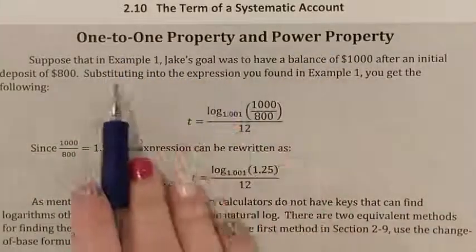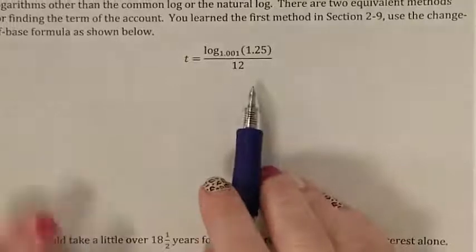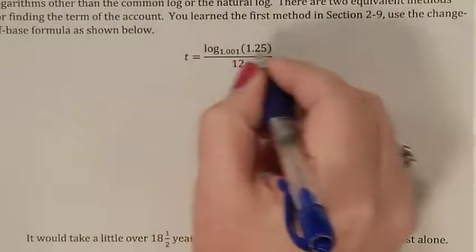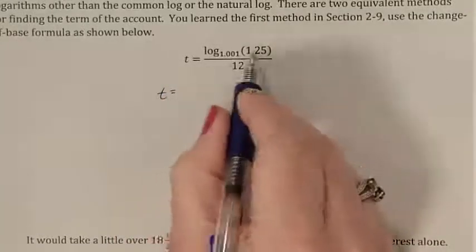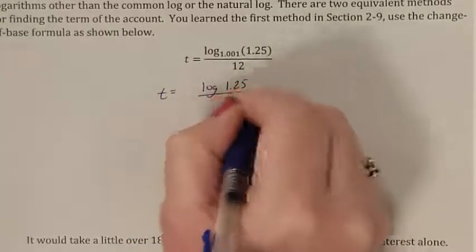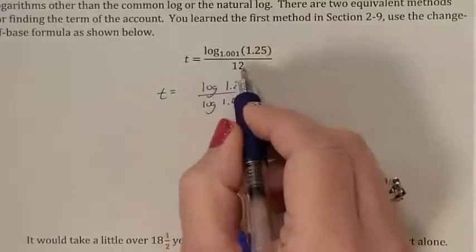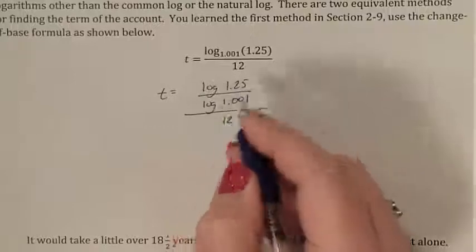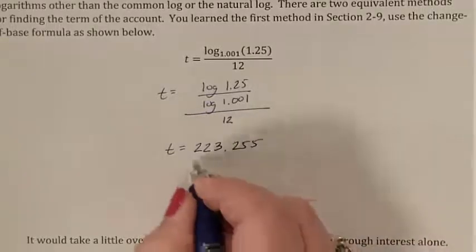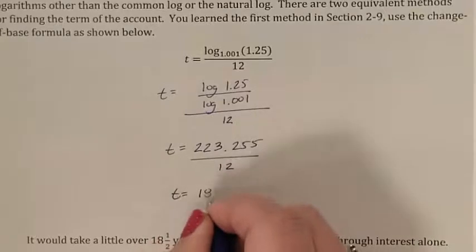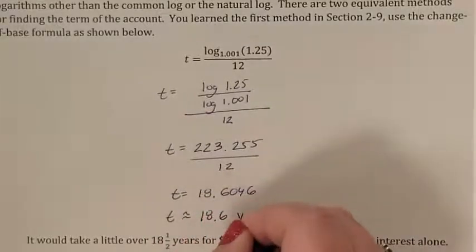Lesson 2.10 has a second article that you need to read: the one-to-one property and the power property. Please read this article to be familiar with the terminology. This article has one practice problem. The numerator we cannot do in our calculator — we need to change the base form. So T equals log of 1.25 divided by log of 1.001, all divided by 12. Typed into the calculator this gives 223.255 divided by 12, simplifying to 18.6046, which means the time is about 18.6 years.